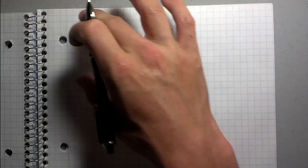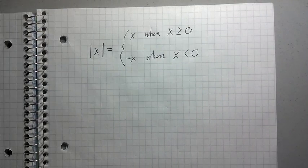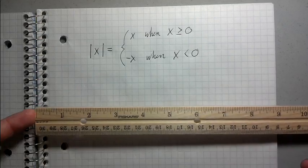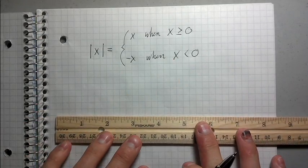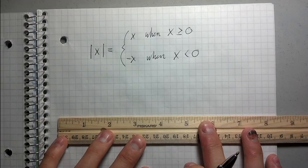Don't worry about this for now. Okay, I'm just going to leave this up here, and I'm going to explain this in terms of a number line, and then hopefully, once I get done doing that, this will make more sense. So, check this out. So, I'm going to draw a number line right here, okay?